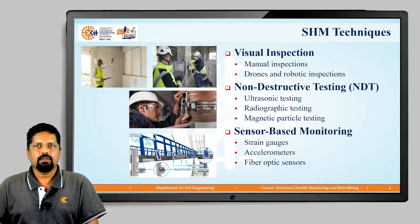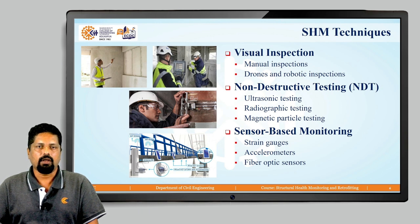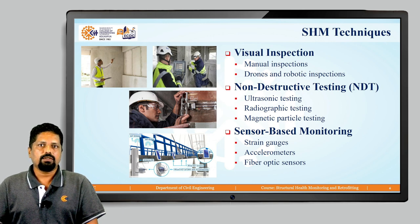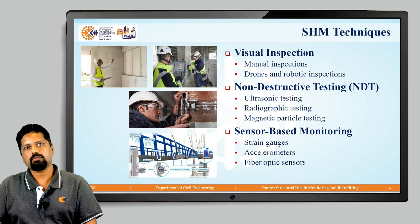These are the different structural health monitoring techniques: visual inspection, non-destructive testing, and sensor-based monitoring. The first two pictures show visual inspection, which requires manual inspection on-site to identify different flaws and defects. This can be conducted manually or, in the current era, using drones and robotic inspection for visual health monitoring. In non-destructive testing, different tests such as ultrasonic testing, radiographic testing, and magnetic particle testing are used. In this approach, no component is damaged while we obtain data regarding the health of the structure.